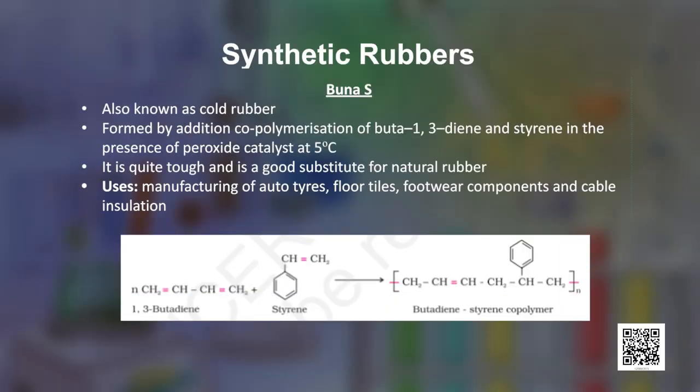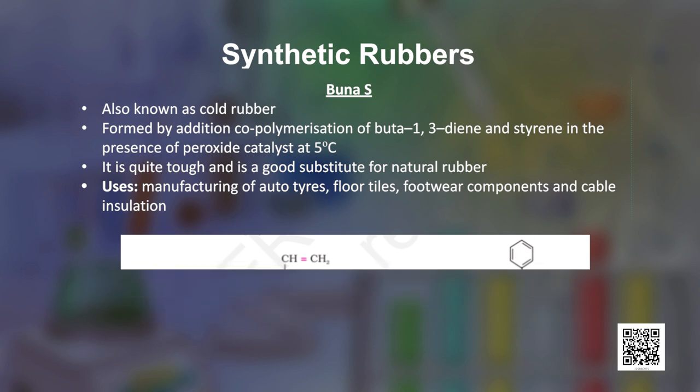Buna S is a copolymer formed by addition polymerization of buta-1,3-diene and styrene in the presence of a peroxide catalyst at 5°C, and is also called cold rubber. This copolymer is quite tough and is a good substitute for natural rubber. It is used in manufacturing auto tires, floor tiles, footwear components, and cable insulation.